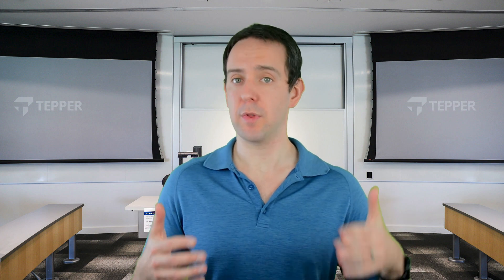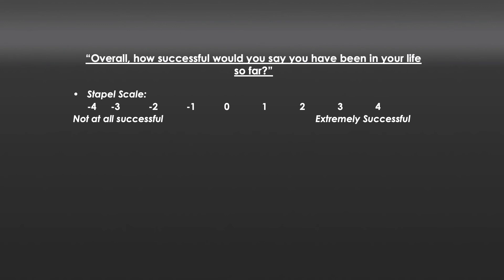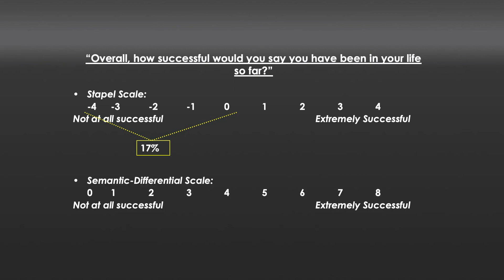Now, I said those numbers are arbitrary, but that's because I put them on after the fact. Numbers themselves, when they're placed on a scale, are not arbitrary. For example, if I have a question like 'overall, how successful would you say you've been in your life?' asked on a staple scale going from negative four (not at all successful) to positive four (extremely successful) — it turns out this was done in a particular study. What they found was that 17% of respondents indicated one of those first five options. But another group who answered the same question with numbers changed to go from zero to eight — for those same first five options, 44% of people were willing to endorse those particular choices.